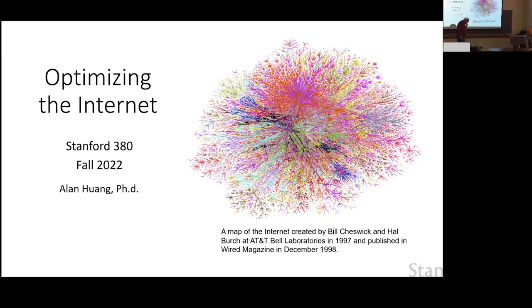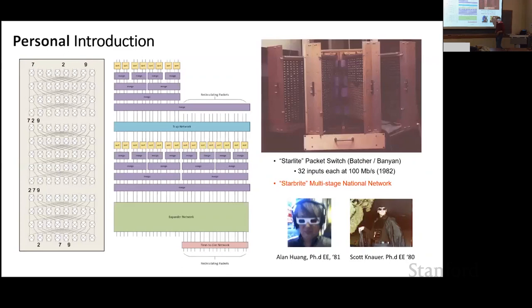I'll talk about how to optimize the internet — and you're probably thinking, okay, this is hype. Here's a map of the internet done by Bill Cheswick and Hal Burch at Bell Laboratories, mapping out all of the internet as of 1997. There are no subsequent pictures because they blocked traceroute, which was the main way of gathering information. What I'll be talking about is basically how to optimize this hairy, terrible network.